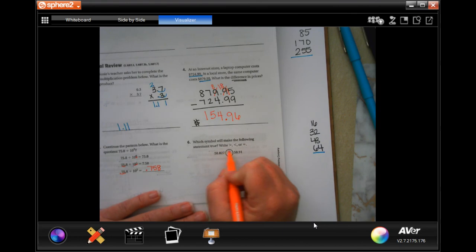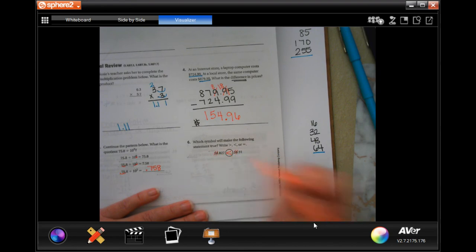Which symbol makes the following statement true, greater than, smaller than, or equal to? So we have, they both start with 5. They both have an 8. They both have the decimal there. So that's good. That one has an 8. And that one has a 9 now, which makes that one bigger.